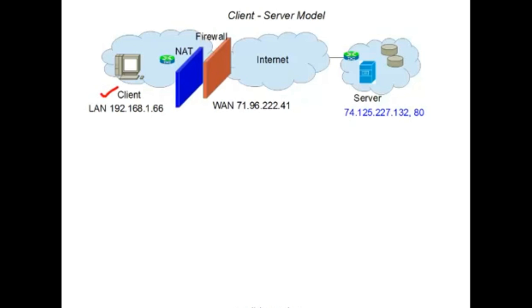...we have a client sitting in a local area network, which is generally a private address space. It's going to access a server on the world wide web — Google and Google Maps are two examples we've used. The two barriers that separate the private network from the public network are network address translation (NAT) or port address translation, depending on which technology is used, residing in the home router, and a firewall.